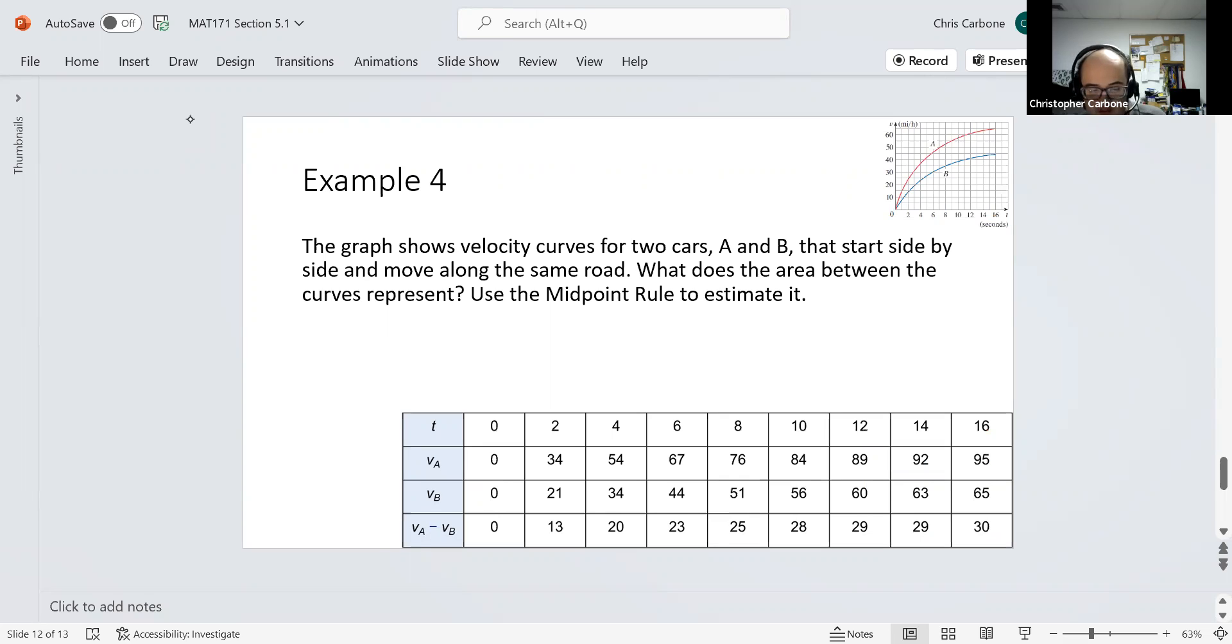For example 4, this graph shows velocity curves for two cars A and B that start side by side and move along the same road. We want to know what does the area between the curves represent and use the midpoint rule to estimate it.